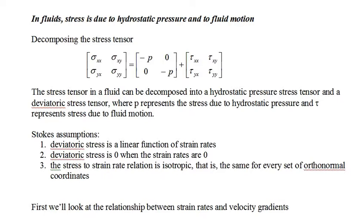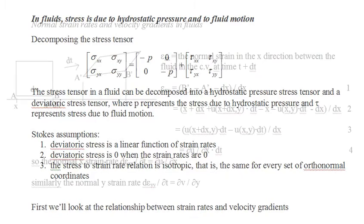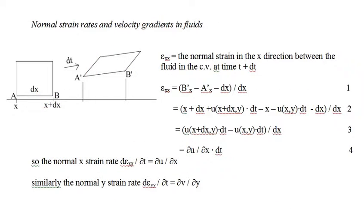We'll derive expressions for the deviatoric stress components in terms of strain rates, and then express the strain rates as functions of velocity gradients. The diagram shows the fluid at the control volume at time t, and then the same fluid at time t plus dt. We can view the fluid at time t plus dt as a stressed, i.e. displaced, version of the fluid at time t.